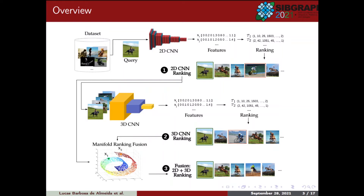In the last step, both rankings defined by the 2D and 3D-CNN are fused by a Manifold Learning algorithm in order to compute the final retrieval results. Manifold Learning methods tend to explore more global similarity relationships. The computed similarity measure considers the entire dataset, and not just pairwise comparisons, considerably increasing the retrieval efficiency.